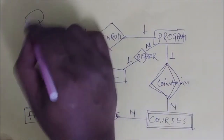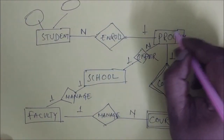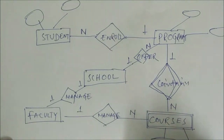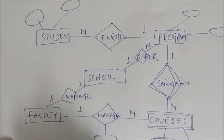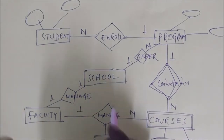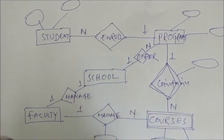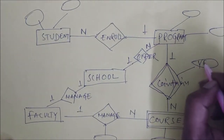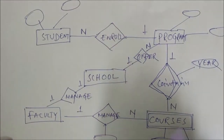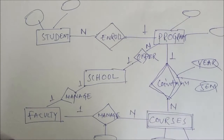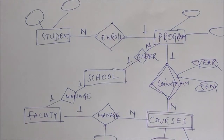I have not shown the attributes, but there are attributes for each entity. You can identify and add them. There may also be attributes on relationships — for example, the program-contains-course relationship may have attributes like year and semester. So this is a brief overview of the ER Diagram. Thank you for watching.